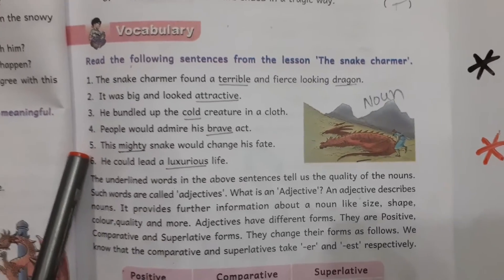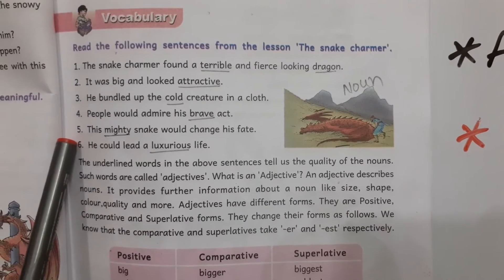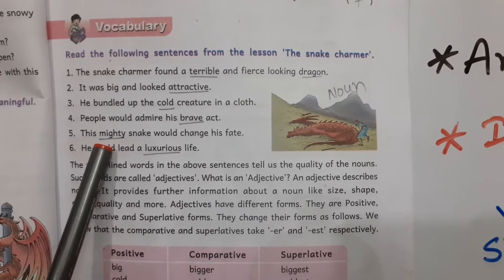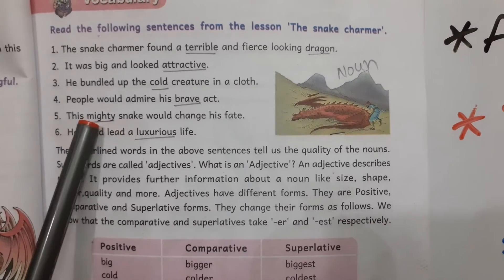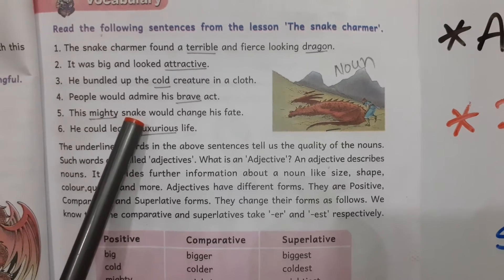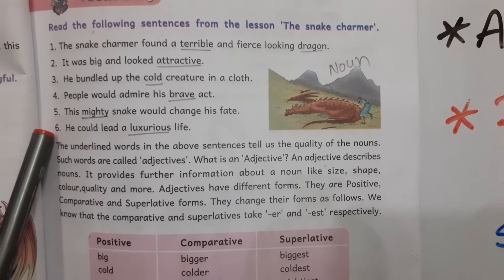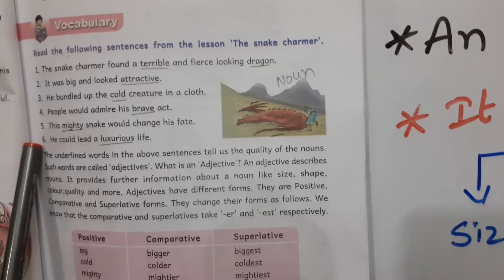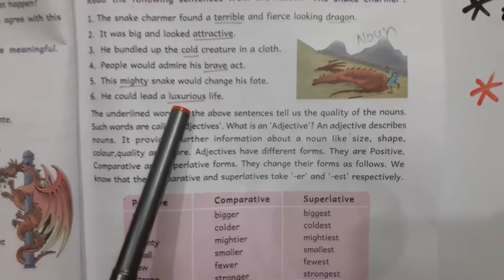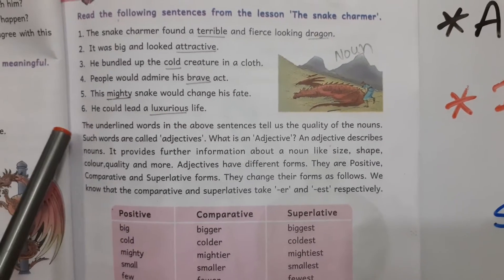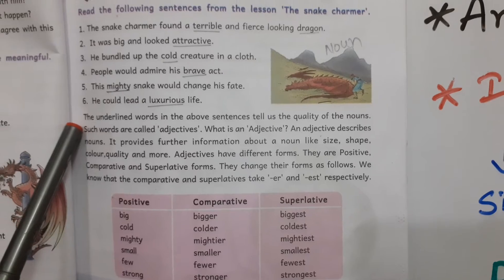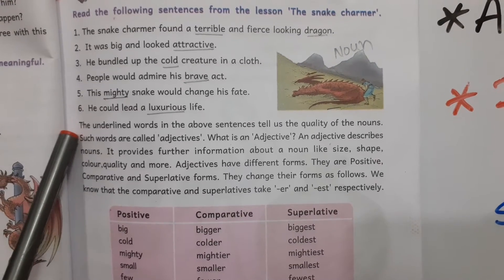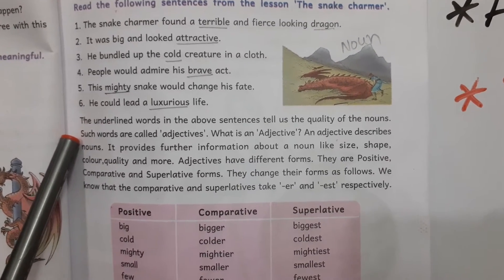This mighty snake would change his fate — 'mighty' describes about the snake. He could lead a luxurious life — 'luxurious' is the adjective here. The underlined words in the above sentences tell us of the quality of nouns. Such words are called adjectives.